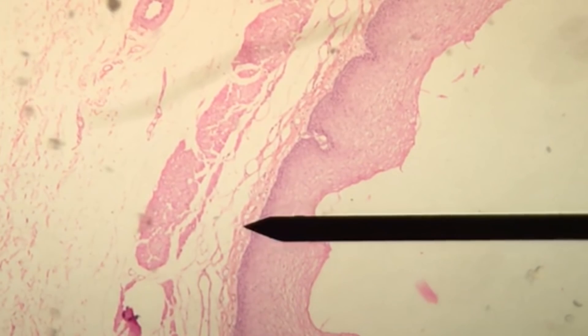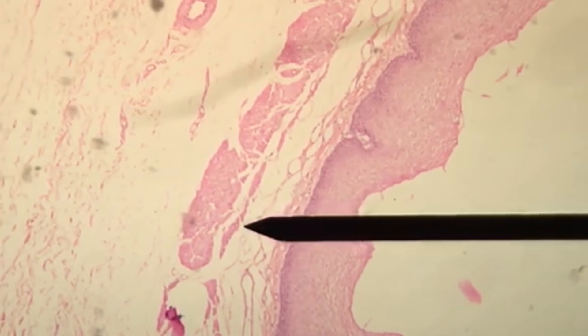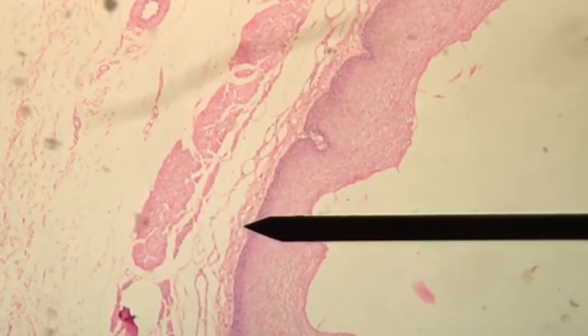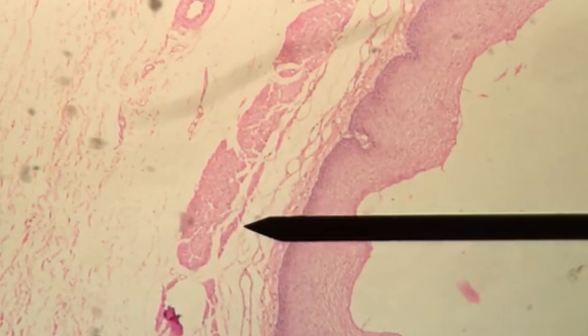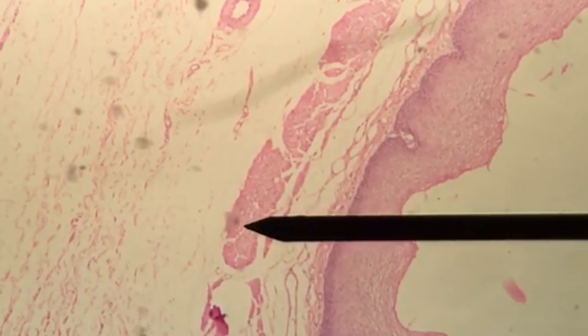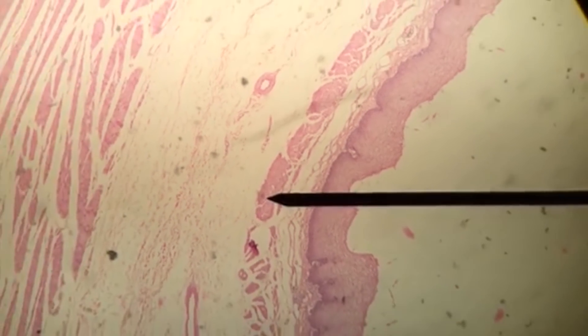The layer below is the lamina propria. It is a connective tissue layer that's very loose, allowing it to be very cell-rich. It's also going to provide support and nutrition to the epithelium, as well as a means to bind the underlying tissue.